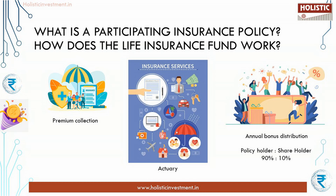Earlier, prior to the LIC IPO in May 2022, the Life Insurance Corporation paid 95% of its surplus to its policy holders while the remaining 5% went to the government. But now the government tweaked the LIC Act with the Finance Act 2021, and the result is the ratio of policy holder and shareholder is changed to 90% and 10% respectively.